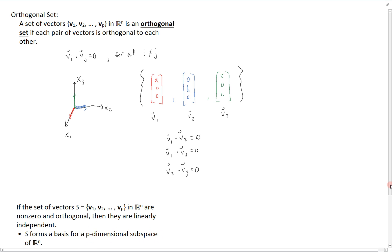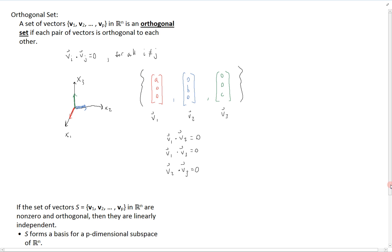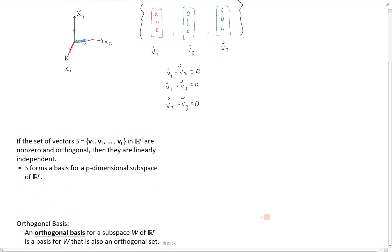This allows us to define an orthogonal basis. An orthogonal basis for a subspace W of Rn is a basis for W that is also an orthogonal set. So we've seen before that we can have a basis for a subspace as just any set of linearly independent vectors. But if that set is also an orthogonal set, then this forms an orthogonal basis.